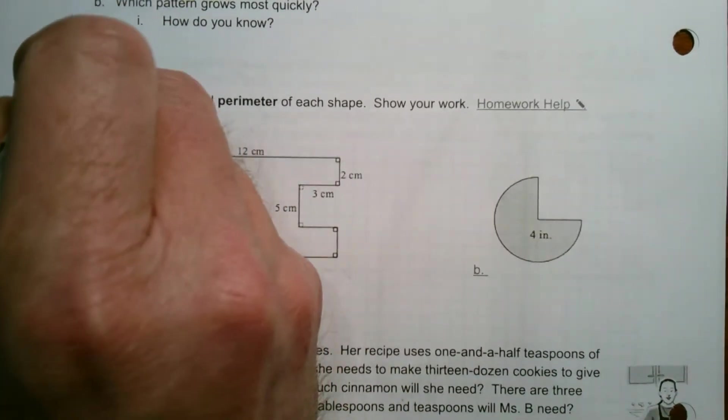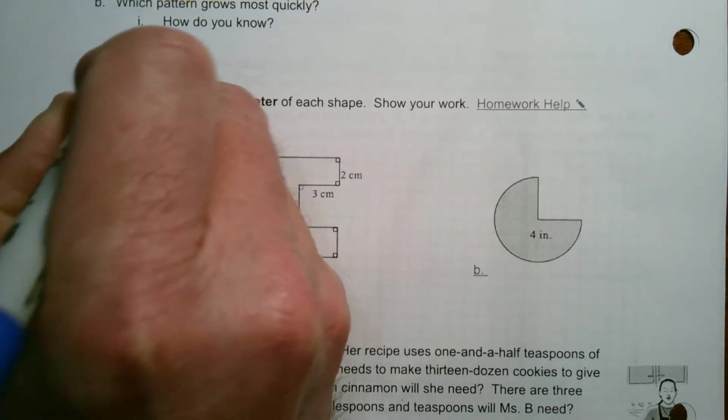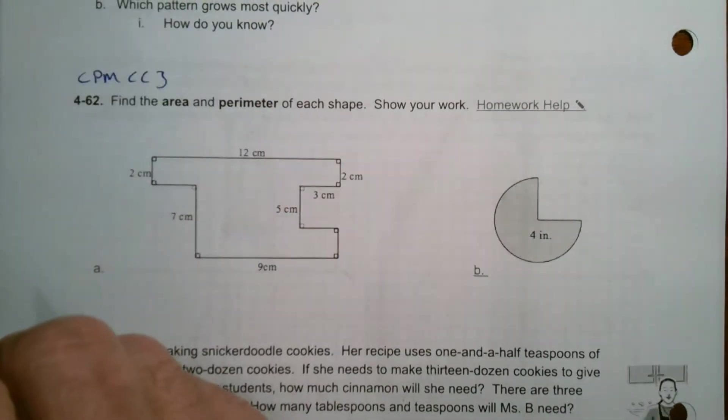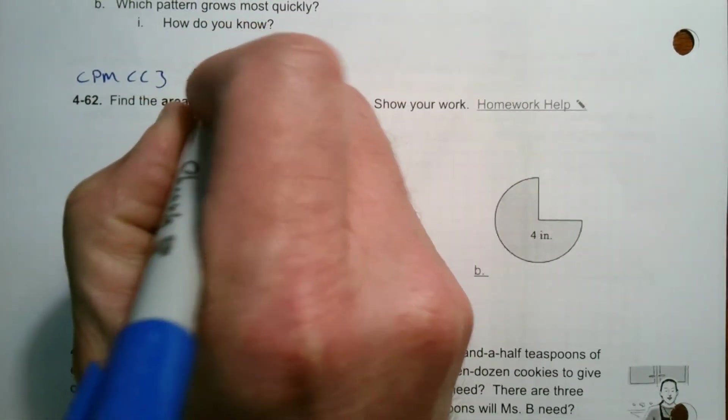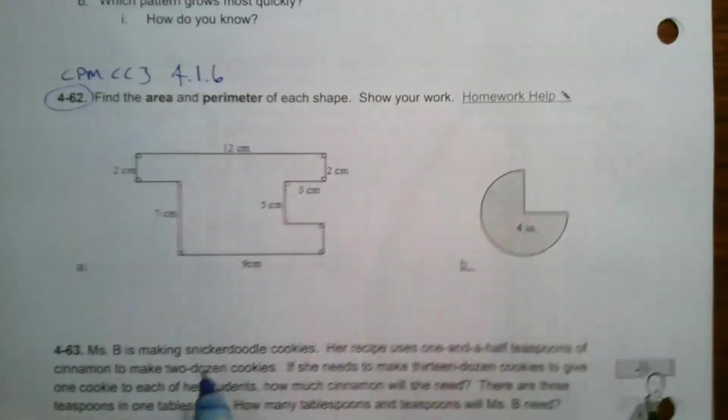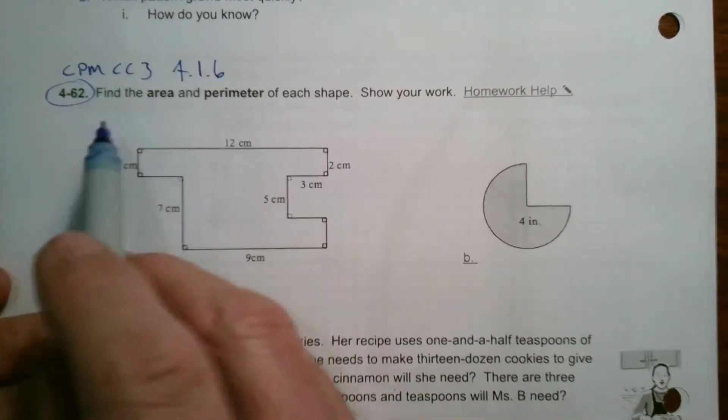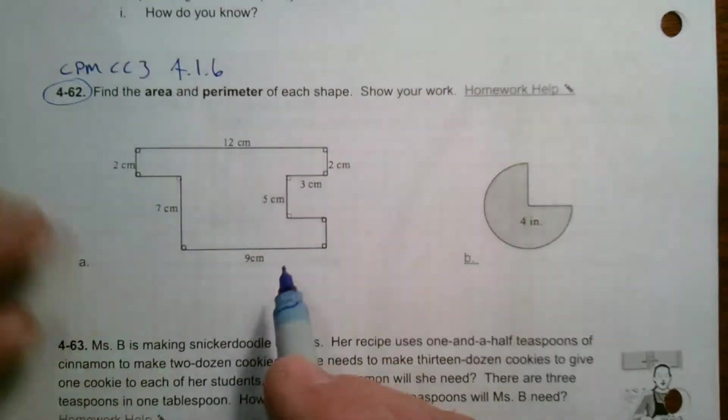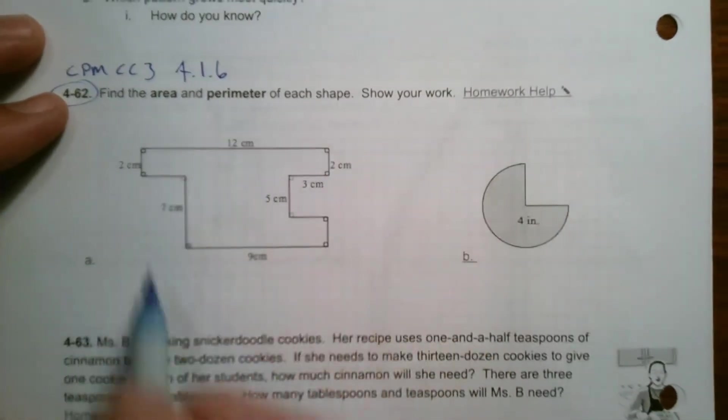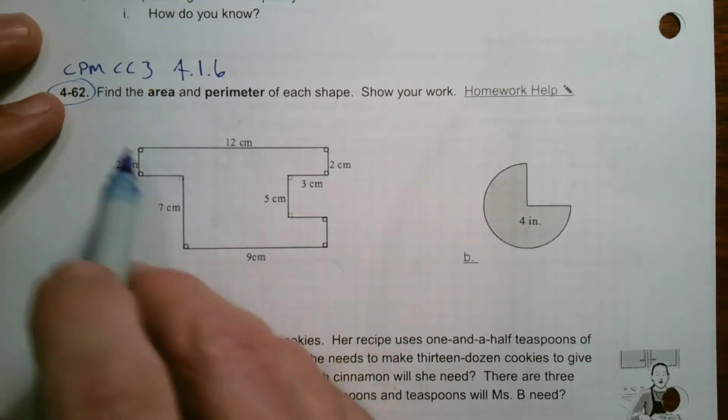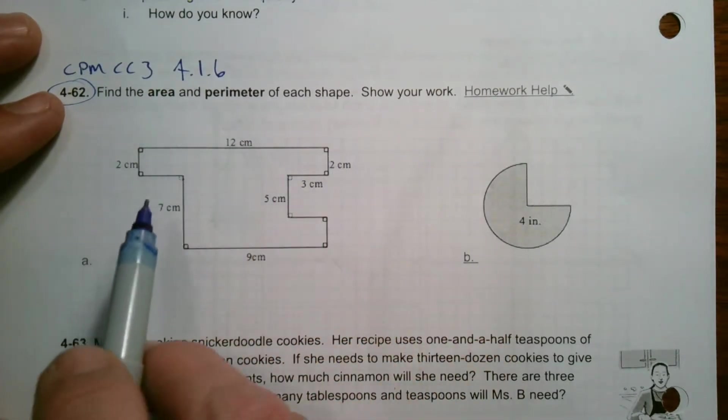This is a problem from CPM's course three, CC3, section 4.1.6, number 4-62 specifically. It says find the area and perimeter of each shape. Show your work. For the first one, it looks like we've got this composite figure of a bunch of rectangles. When we think about how to find the area, there's a couple things you could do.